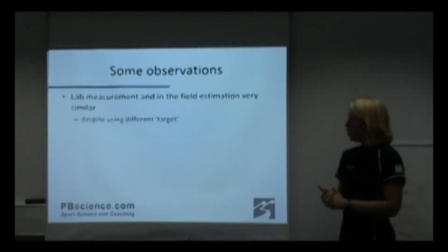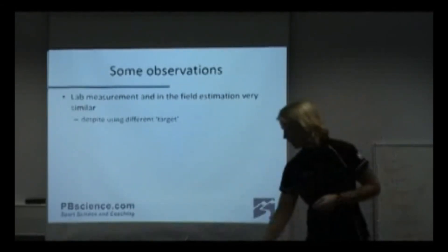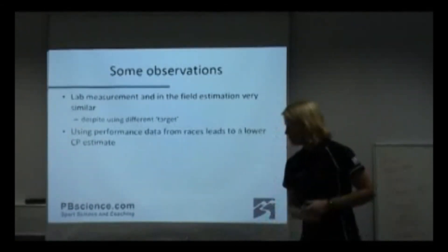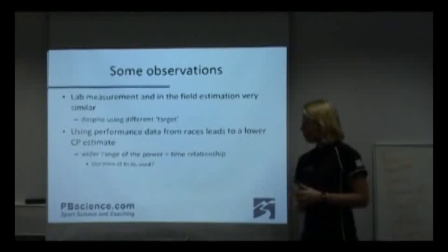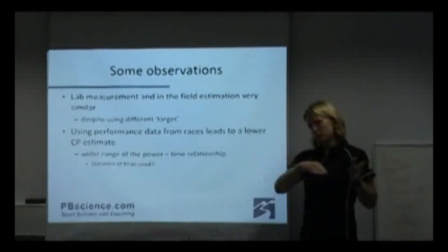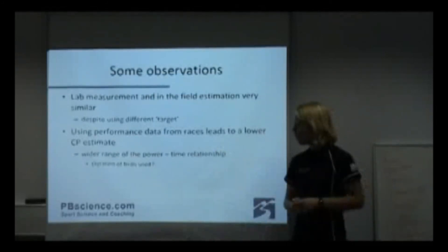So when we look at, say, a lab measurement in the traditional critical power protocol, where I've done three trials at different percentages of my VO2 max. I've got set powers and you go for as long as you can. Compared to being out in the field and doing those blocks of time of 3, 5 or 7, 12 minutes. They're pretty similar, even though the target to the athlete is different. But using the performance data from races, we tend to get a lower critical power. And what we suspect, and it's probably quite obvious in a way, that the longer the duration of the trials, the critical power drops. So I'm using an hour's worth rather than between 2 and 15 minutes. So it really does have an effect on which trials we use. That's why we tend to try and stick to 2 to 15 minutes.